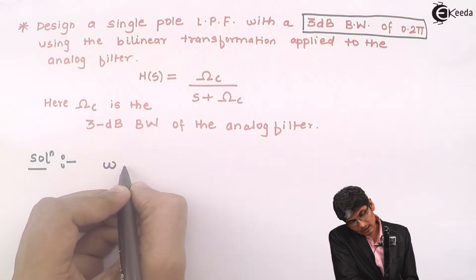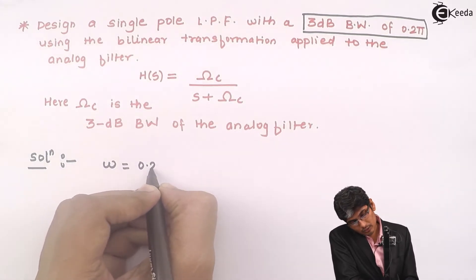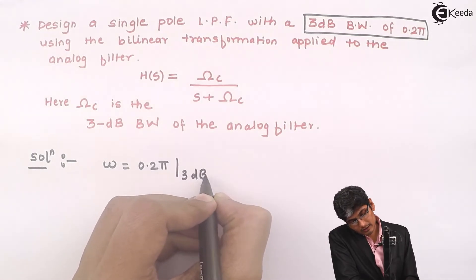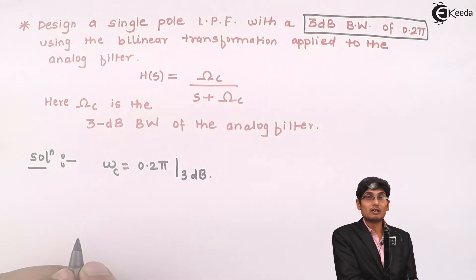So the given data is that my ω is 0.2π at 3dB, which means it is the cutoff frequency.